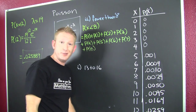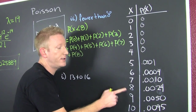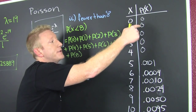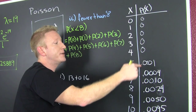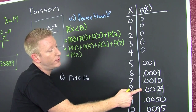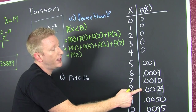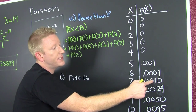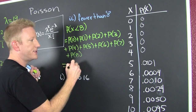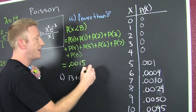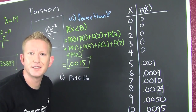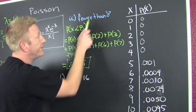Now it's good they asked us to use the table because I put the table right here. I add 0 plus 0 plus 0 plus 0 plus the relevant values and I get 0.0015. X, you're not supposed to be there because it says fewer than eight, so I got rid of that value.